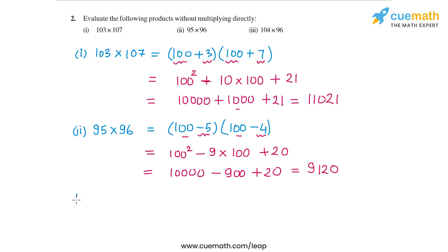Now let's go to the third part. In the third part, I have 104 times 96. In this case, the first multiplier is more than 100, the second one is less than 100. So I can write the first one as 100 plus 4, and the second one as 100 minus 4.